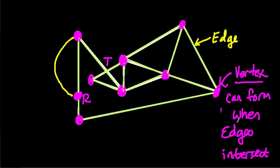So they can form when edges intersect. They don't have to. Or they can form, or you can place them. That's what I mean by can form. That might be a little confusing, sorry.